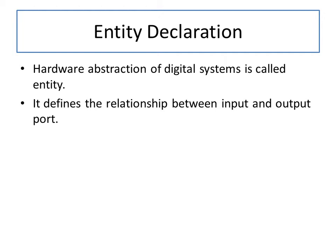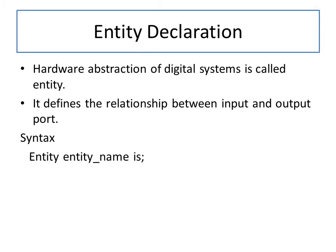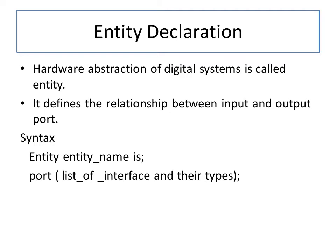Entity declaration defines the relationship between input and output ports. The syntax is: first write the keyword 'entity', then the entity name according to the combinational or sequential circuit being defined. Next, define the port — a list of interfaces and their types — indicating which terms are input and which are output, and their data type: bit, bit vector, standard logic, or standard logic vector. Finally, end the entity.